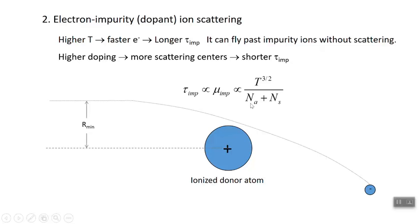N sub A is the number of acceptors, and N sub D is the number of donors. That's a typo, N sub D.